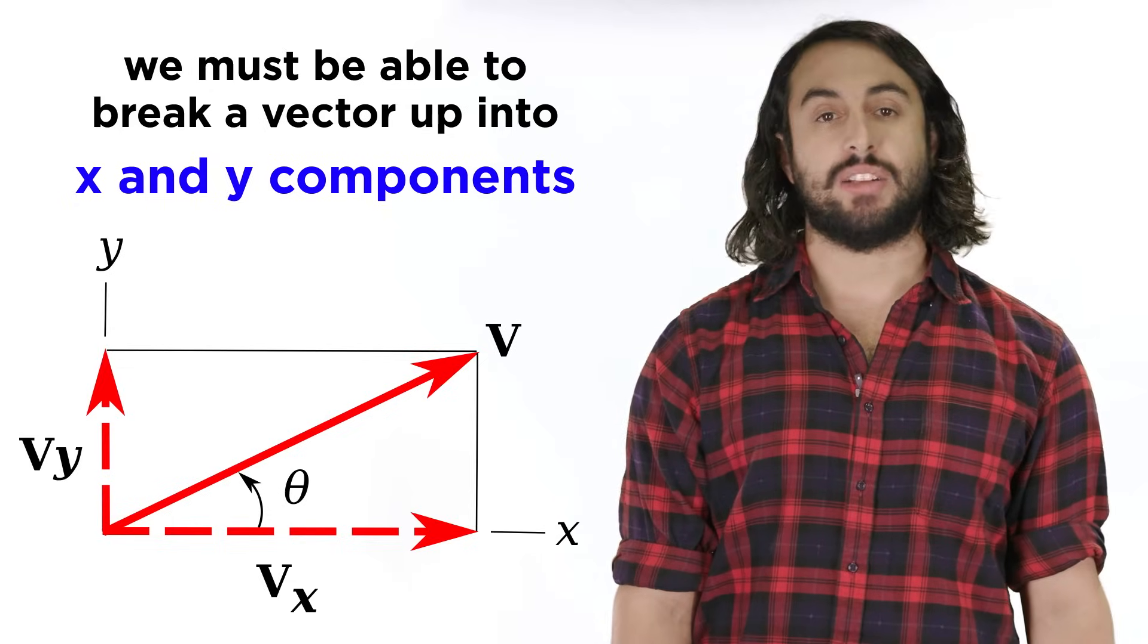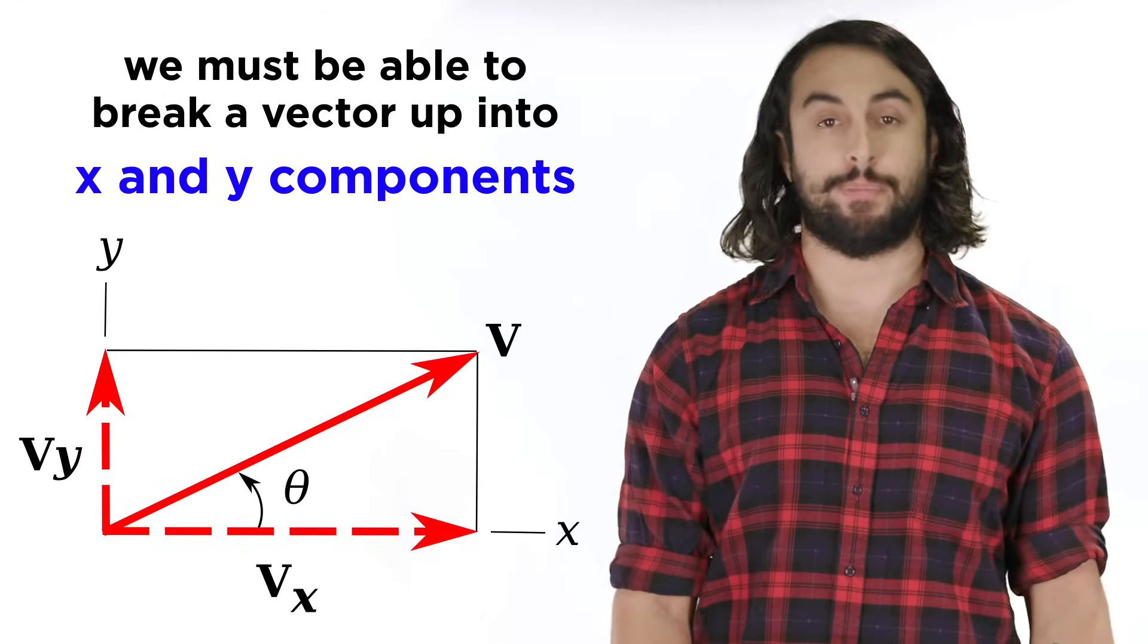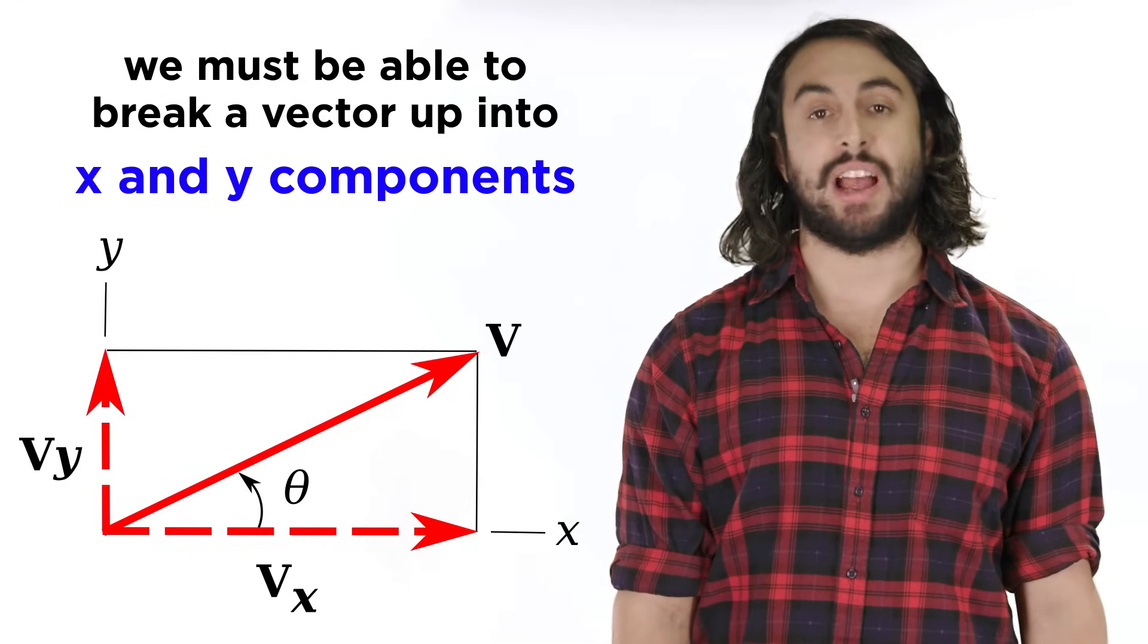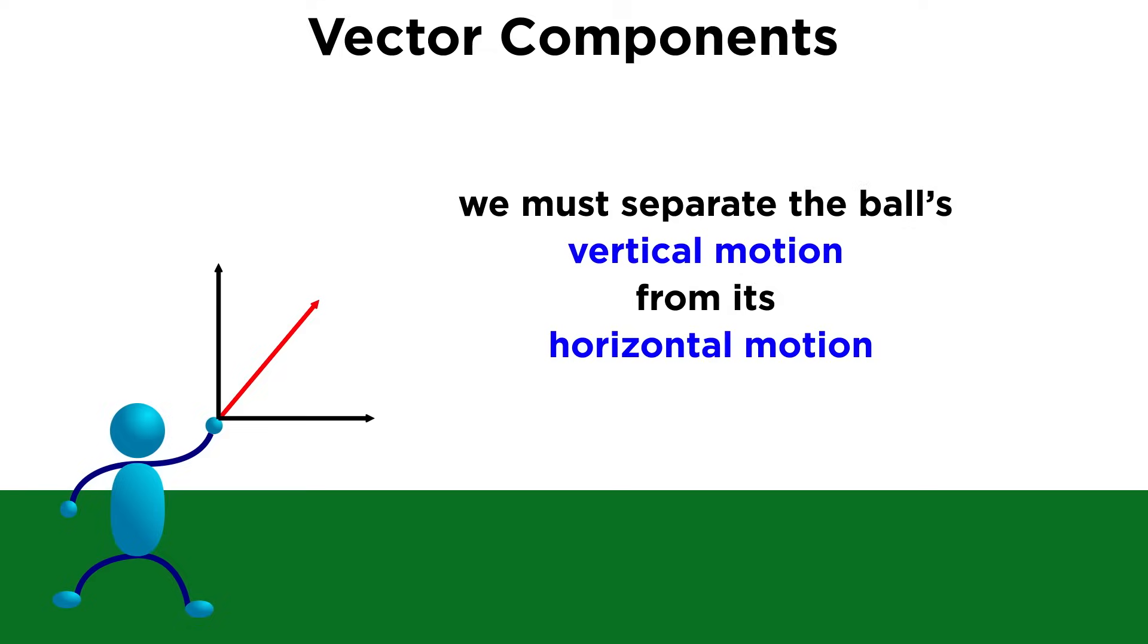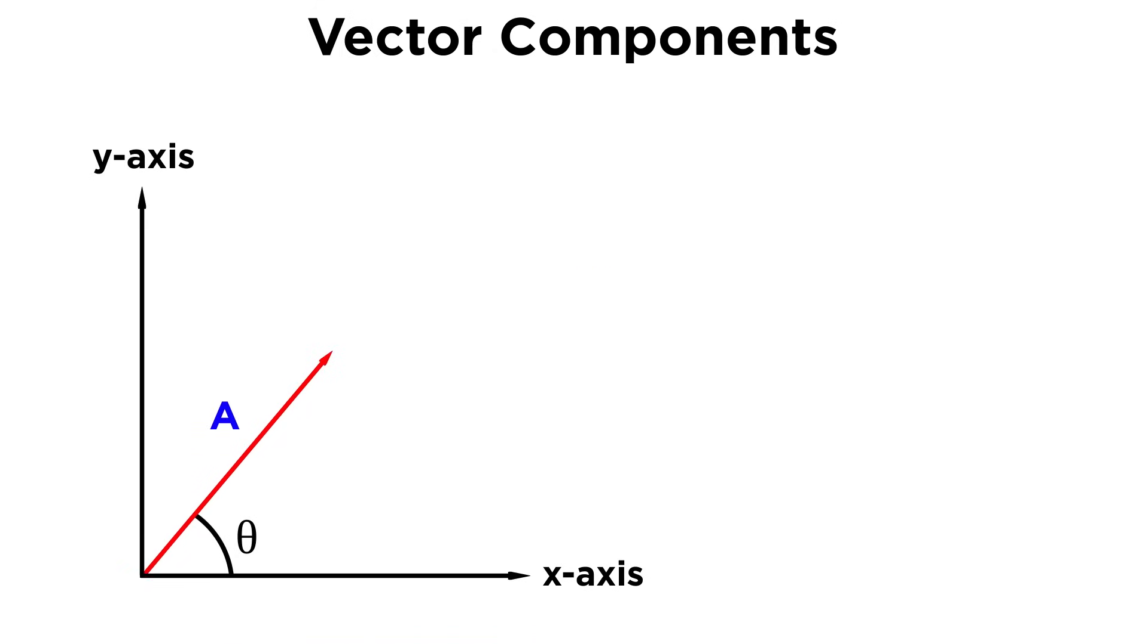Another thing we might want to do is break up a vector into x and y components. This is useful when looking at projectile motion. If a ball is thrown at an angle, its velocity can be represented with a vector, but because gravity is operating on the ball in the y direction, pulling it down to the earth, we will want to be able to separate its vertical motion from its horizontal motion, so we can take this vector and split it up into components. All we need to know is the magnitude of the vector and its angle from the horizontal.